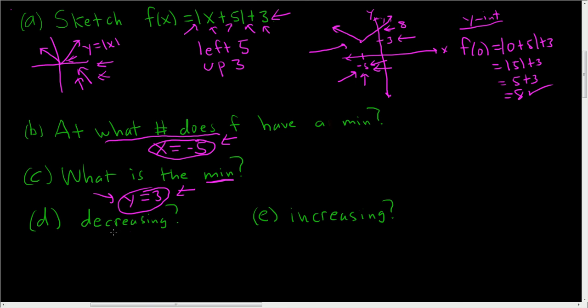Now decreasing, you always want to answer in terms of X's for these. So your answer always involves X-values. It's decreasing from negative infinity all the way to negative 5. And you always want to use parentheses when you're doing problems with increasing or decreasing. Again, from negative infinity all the way to negative 5, it's getting smaller.